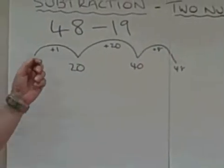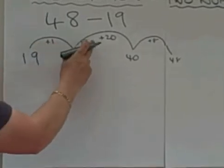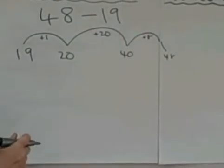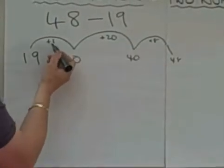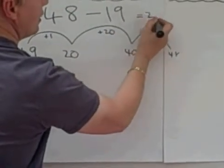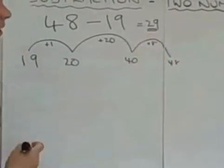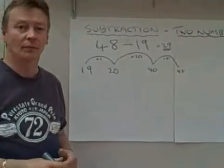So the difference between 48 and 19 is 1 and 20 and 8. And if you add all those numbers together, you've got 28, 29. So the difference is 29. That's the first method by using a number line.